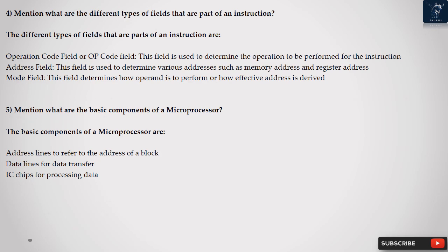Question 5: Mention what are the basic components of a microprocessor? The basic components of a microprocessor are: Address Lines to refer to the address of a block; Data Lines for Data Transfer; IC chips for processing data.